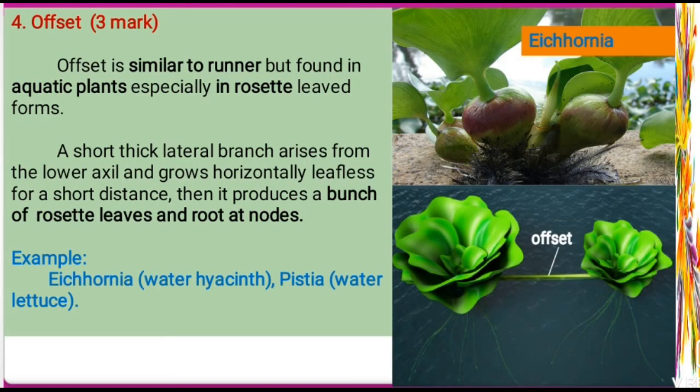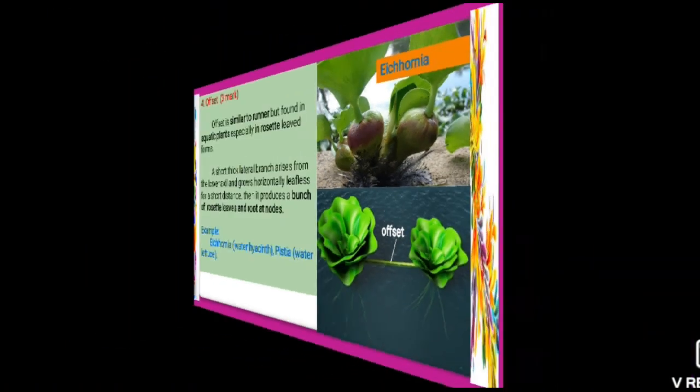Today's class covered sub-aerial stem modification, which includes four subtitles: runner, stolon, sucker, and offset. We also discussed phyloclad, cladode, and thorn. Study well, don't waste your time. Thank you, see you in the next class.